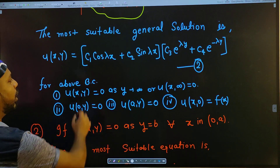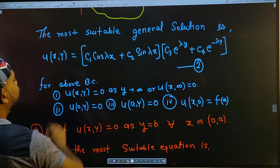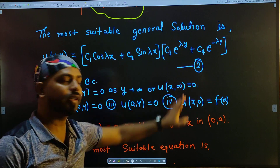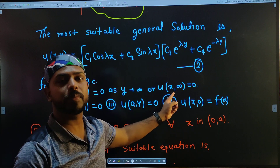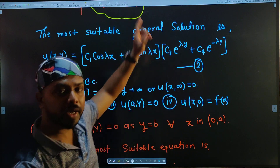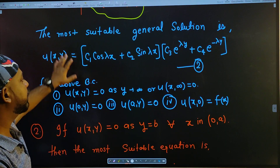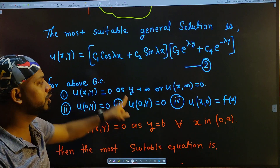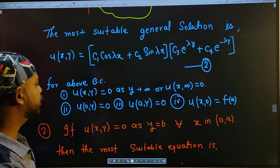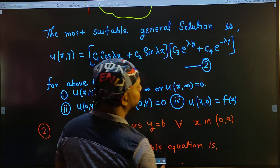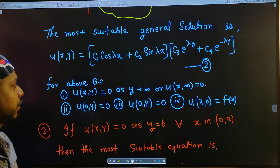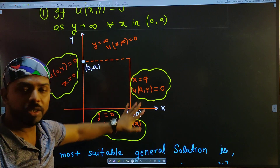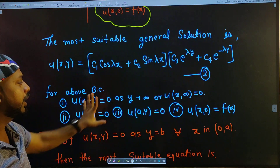For the above boundary conditions — u(x, y) = 0 as y tends to infinity, or u(x, ∞) = 0 — it means x has some value but y tends to infinite and equals 0. So as y tends to infinity, the value of u at the top must be 0. The boundary conditions are: u(0, y) = 0, u(a, y) = 0, u(x, 0) = f(x). These are the boundary conditions shown in the diagram.